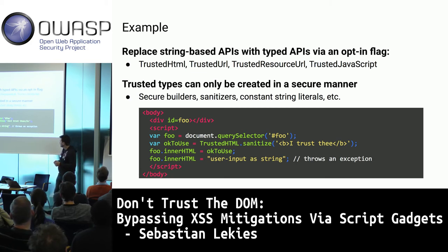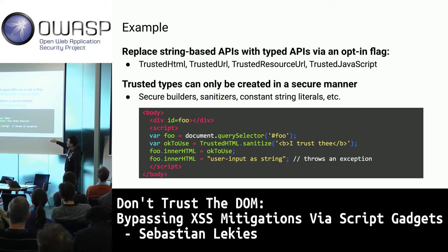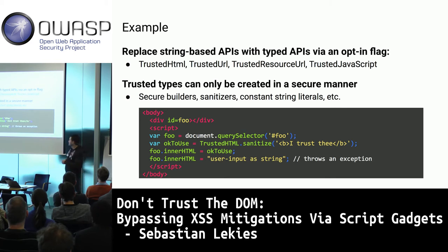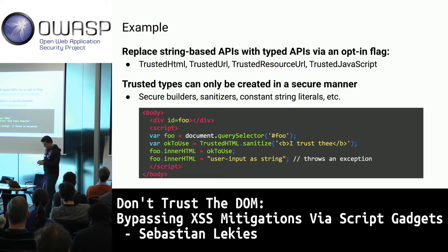With this type system we get guarantees — a developer cannot introduce XSS because all the ways to obtain a type are safe. If you only allow assigning these types to DOM sinks, your application is safe. In enforcement mode, assigning a raw string to innerHTML throws an exception instead of accepting it. That's how we can kill DOM XSS.